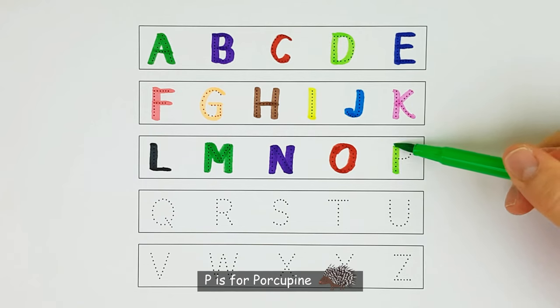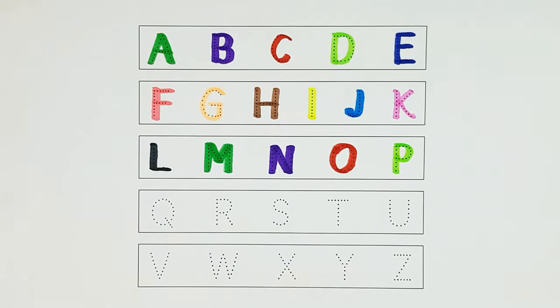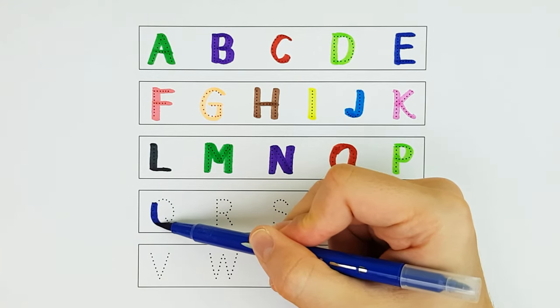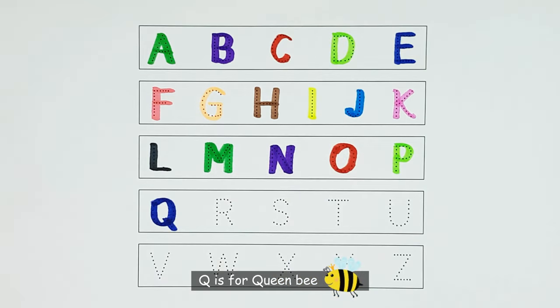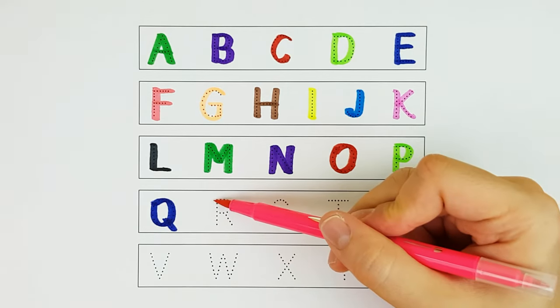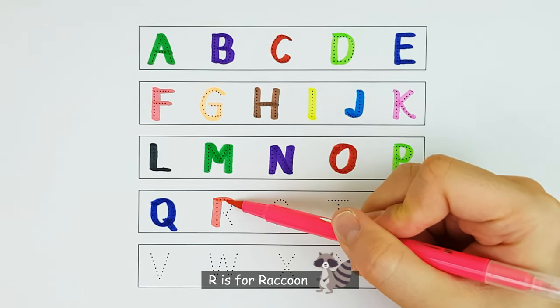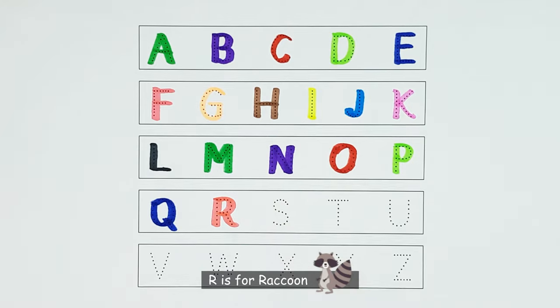P. P is for Porcupine. P. Q. Q is for Queen Bee. Q. R. R is for Raccoon. R.